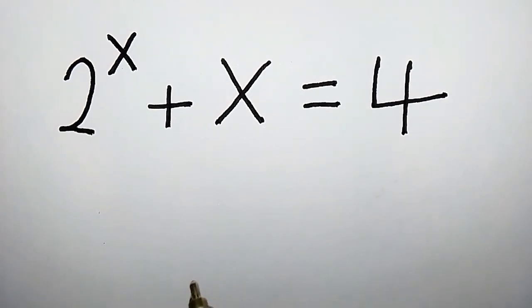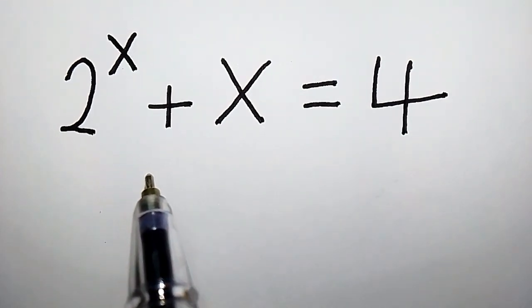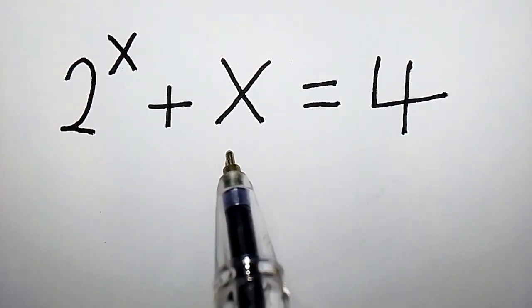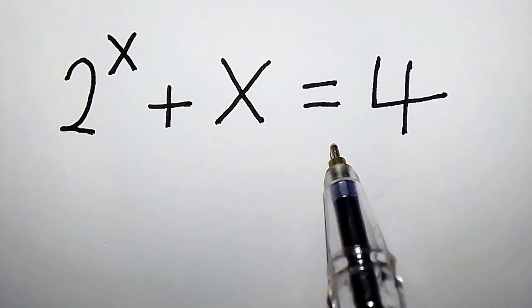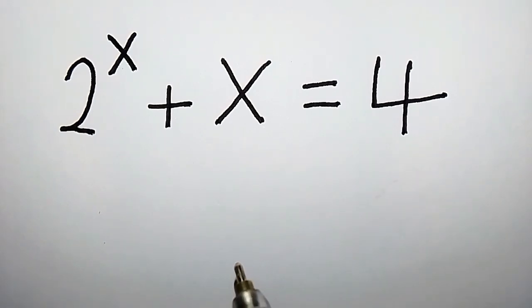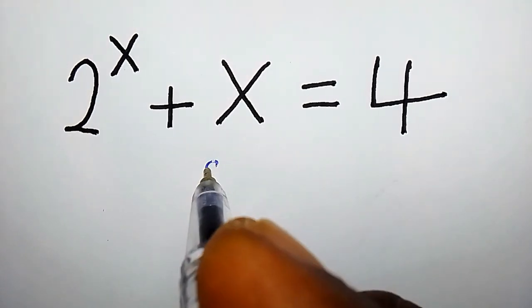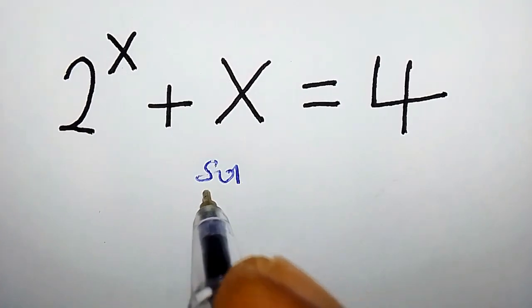This is a pretty interesting equation: 2 to the power of x plus x equals 4. How do we solve for x? Solution.